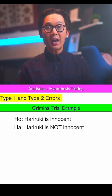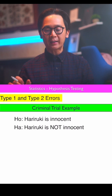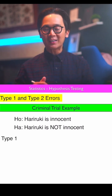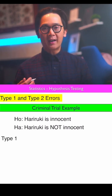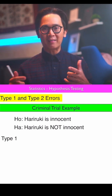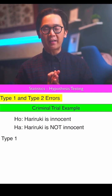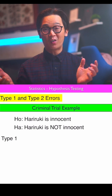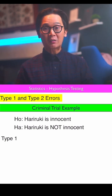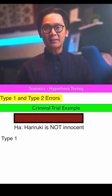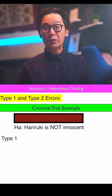So in this case, to write the type 1 error correctly, I use a method called the cover-up method. What I do when I start working with type 1 and type 2 errors — since it's confusing to write them down — is I cover up the null hypothesis. Whatever you are seeing in your hypothesis after covering the null is what you write first.